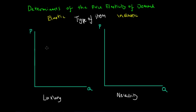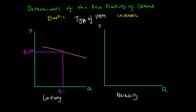If a luxurious item has a very elastic demand curve, we can see that consumers are willing to wait when the price drops to purchase the item. Take a designer shirt for example. If the price starts at $100, the corresponding quantity demanded would be at Q1. If however this price drops to $90 — we see a 10% off sale — the quantity demanded would drastically increase to Q2.